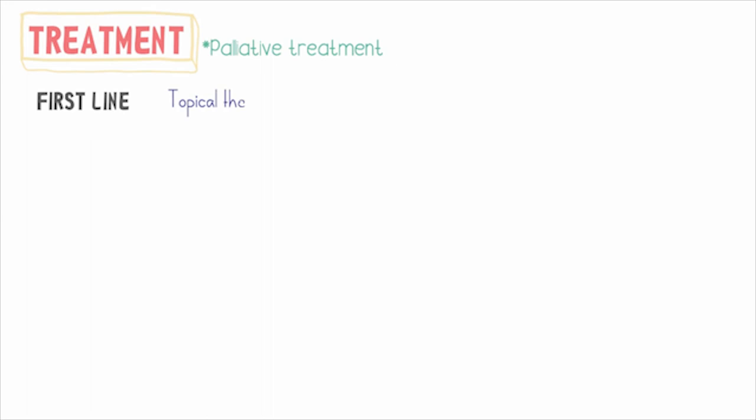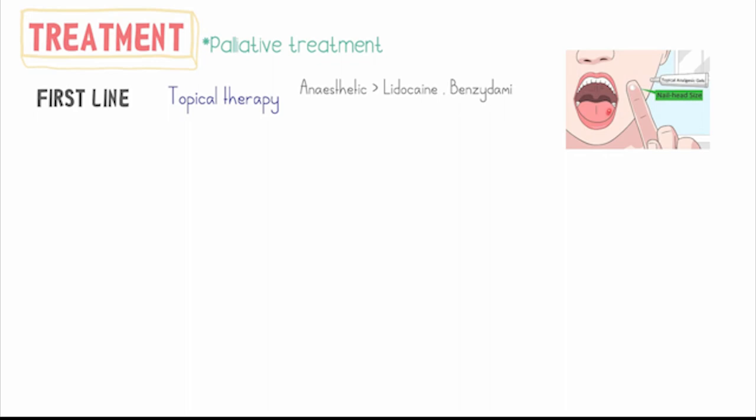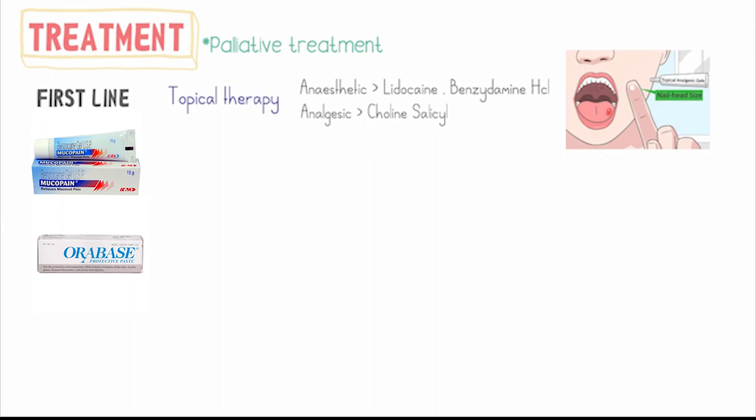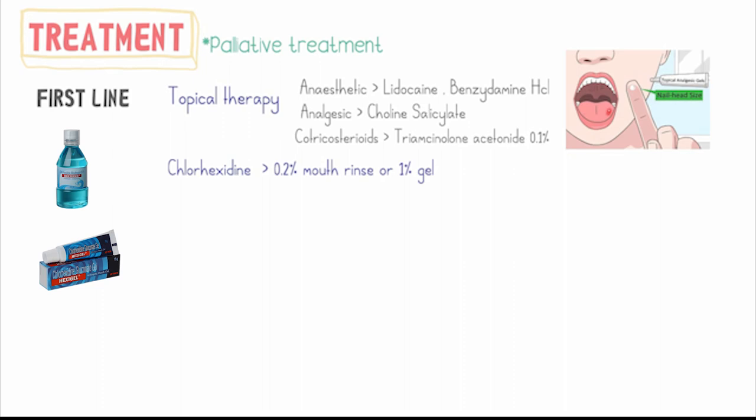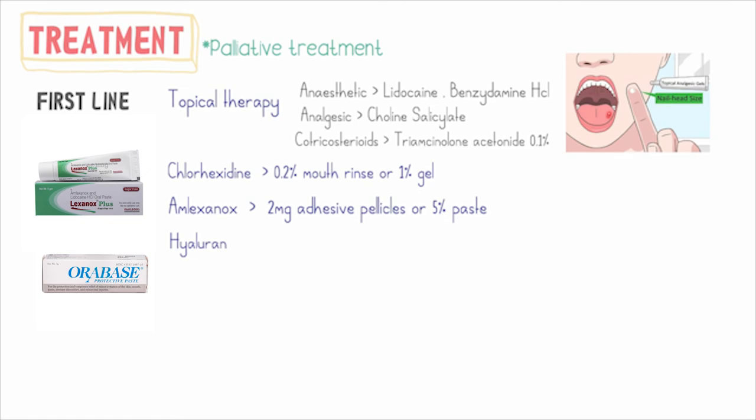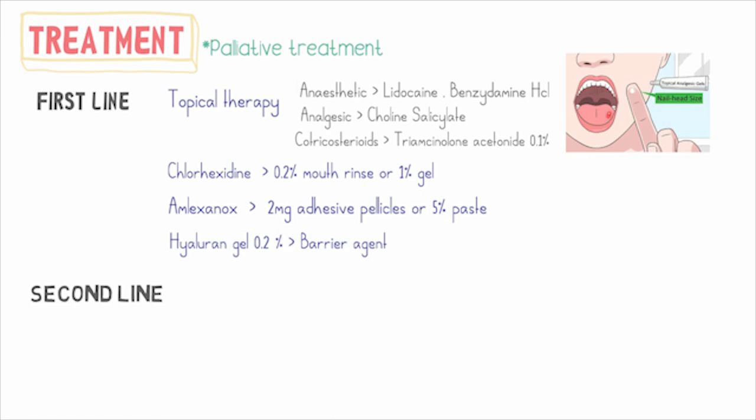The fundamental goal of treatment is to shorten the duration of the ulcer and provide relief from pain. The first line of treatment includes topical therapy, which involves using topical anesthetics such as lidocaine or benzocaine, topical analgesics such as choline salicylates, or topical corticosteroid gel containing triamcinolone acetonide in 0.1 percent concentration. You may also prescribe chlorhexidine mouth rinses or one percent gel, amlexanox, or hyaluronic acid gel which acts as a barrier agent.